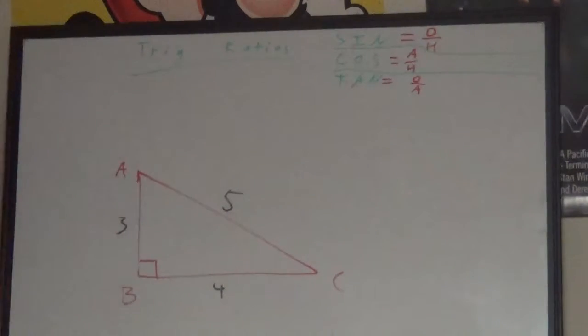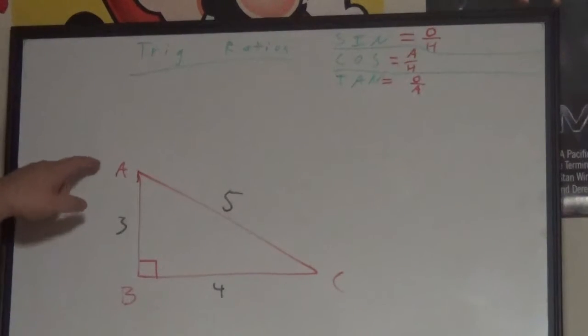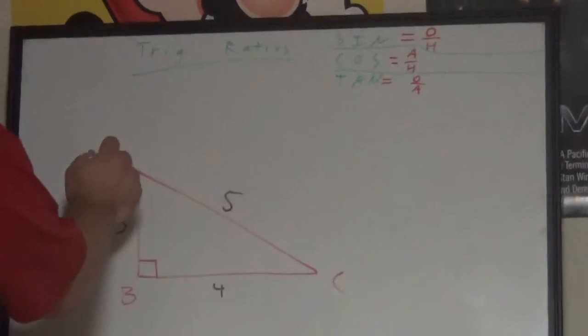When we're talking about the trig ratios, I'm going to use this one triangle with these three sides that I have marked, and I'm going to find A on every one of these just for consistency.